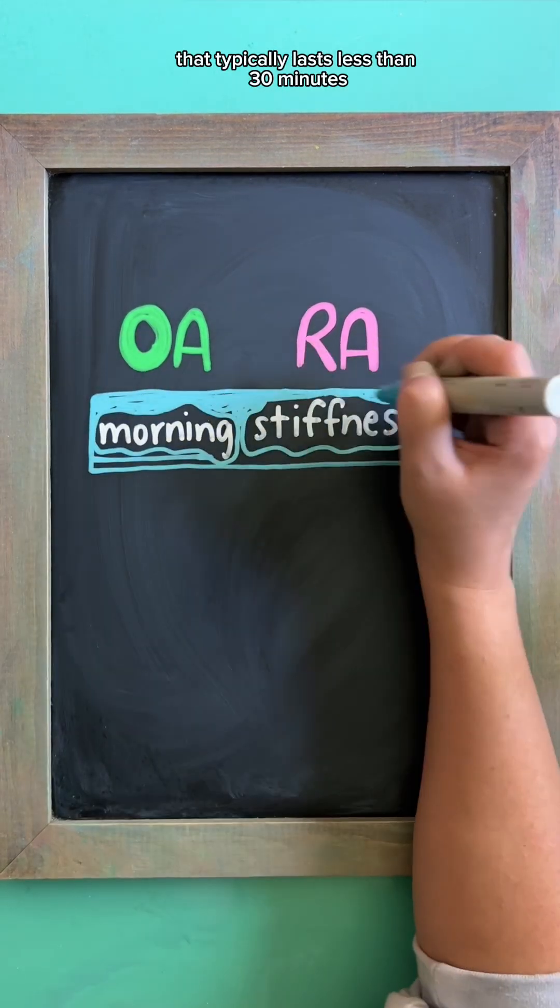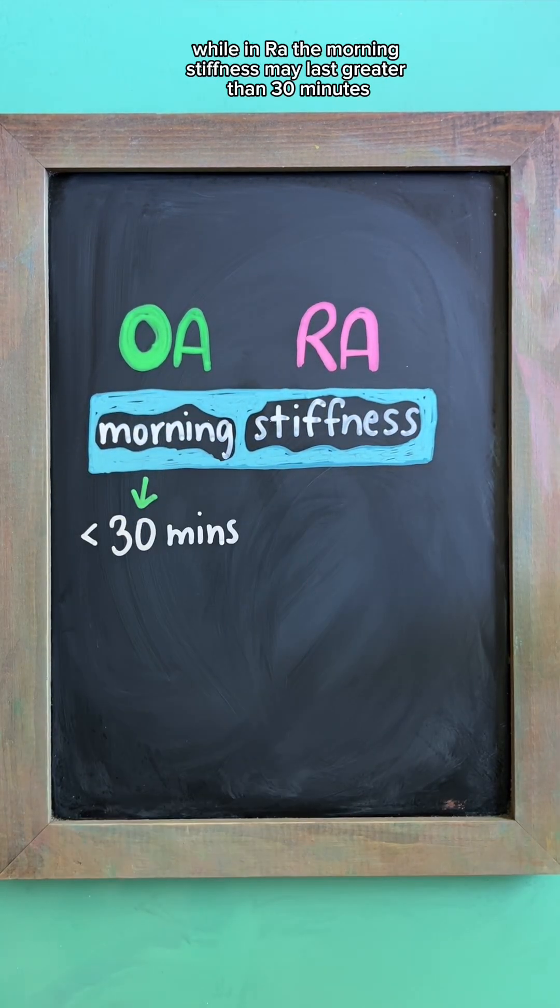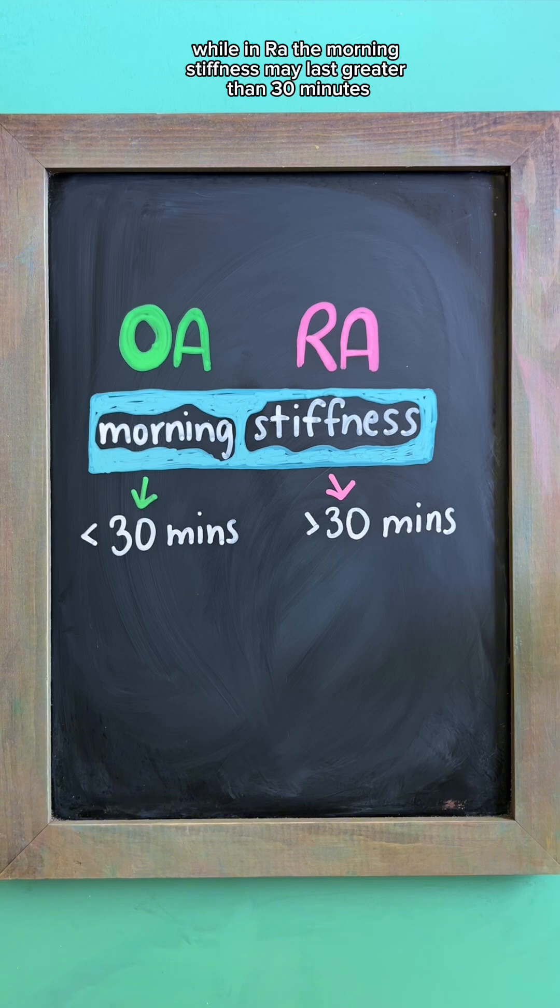In OA, the patient will experience morning stiffness that typically lasts less than 30 minutes, while in RA, the morning stiffness may last greater than 30 minutes.